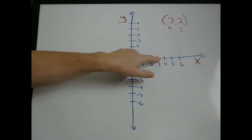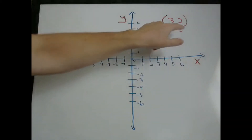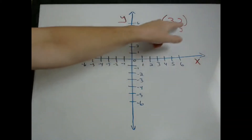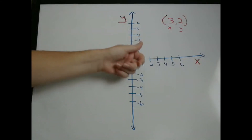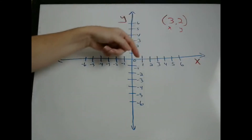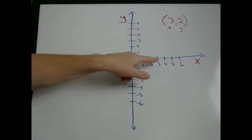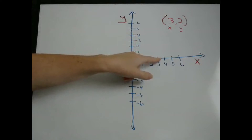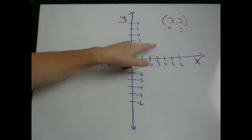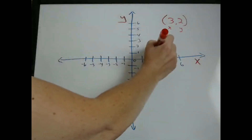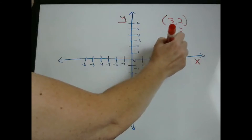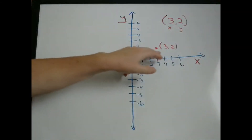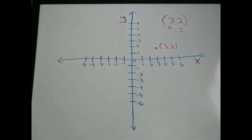And then from that point, you're going to look at your y-component. Here it's a positive 2. If it's positive, you're going to go up. If it's negative, you're going to go down. So since it's a positive 2, we're going to go up 2. So the point (3, 2) you would plot right here.